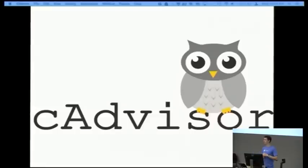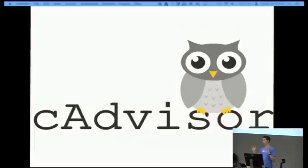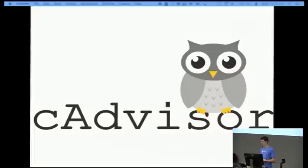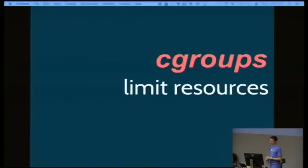One particularly interesting project from Google is cAdvisor. What it does is take the resource numbers coming out of the kernel and give us a time series — because what we really want to see is: this container process is consuming 100 megabytes right now, but what was it consuming 15 minutes ago? Two hours ago? cAdvisor provides an API and a way of collecting these metrics and giving you a time series of what happened and why — which is super useful for making scheduling decisions, giving feedback to developers about their code's performance, and monitoring your own code.